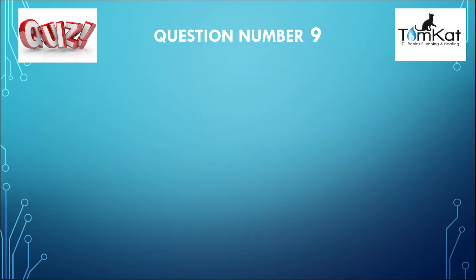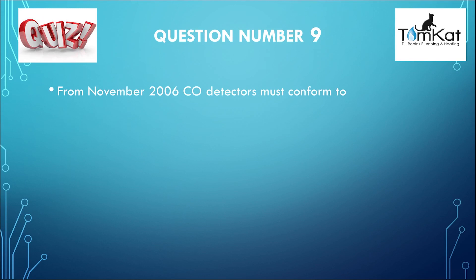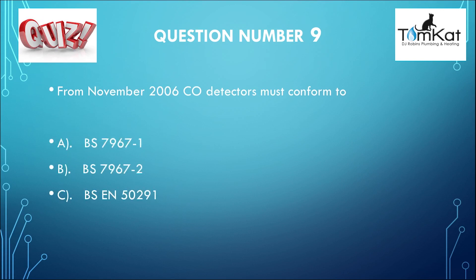Question number nine: From November 2006, CO detectors must conform to — is it A, BS 7967 part 1? Is it B, BS 7967 part 2? Or finally, is it C, BS EN 50291? That is the end of question number nine.